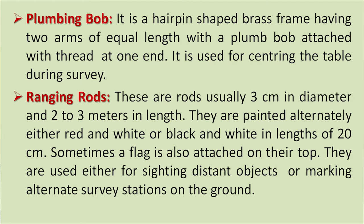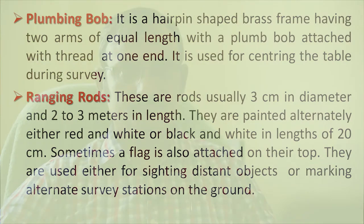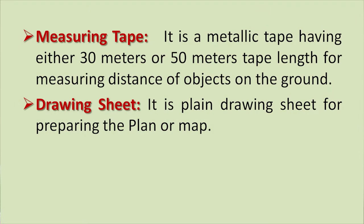The plumbing bob is a hairpin-shaped brass frame having two arms of equal length with a plumb bob attached with a thread at one end, used for centering the table during survey. Ranging rods are rods usually 3 centimeters in diameter and 2 to 3 meters in length, painted alternately red and white or black and white in lengths of 20 centimeters — sometimes a flag is also attached on the top. They are used for sighting distant objects or marking alternate survey stations on the ground. The measuring tape is a metallic tape of either 30 or 50 meters length for measuring distance of objects on the ground.